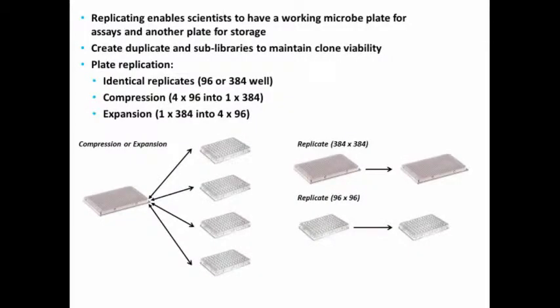A typical process is picking from a large library—for example, picking 10,000 colonies in a single unattended run. And supporting the high throughput picking, we have replicating functions such that scientists can have a working microplate for assays and another plate for storage.